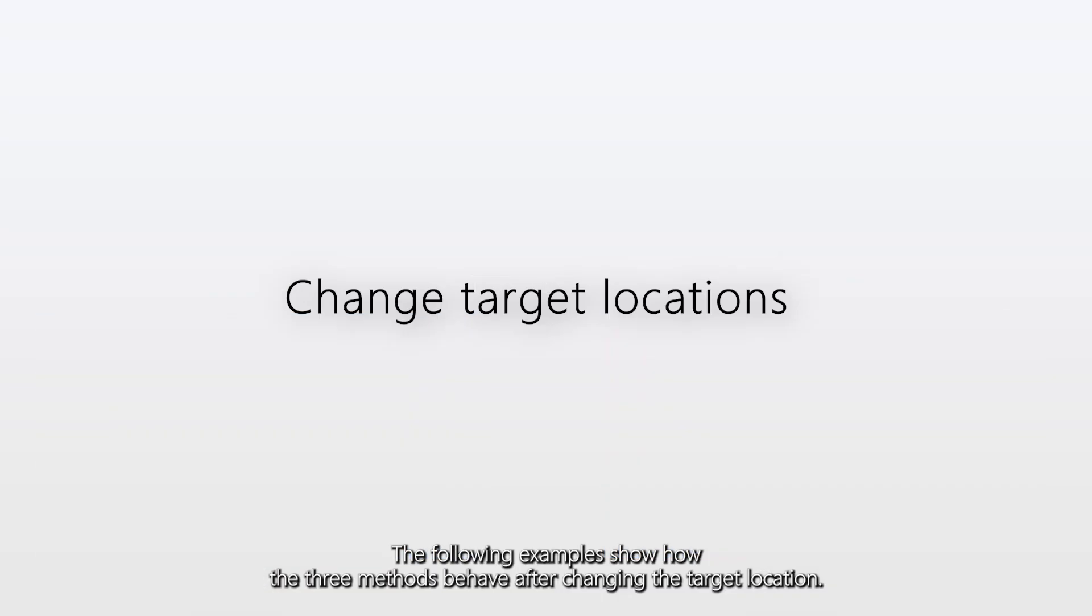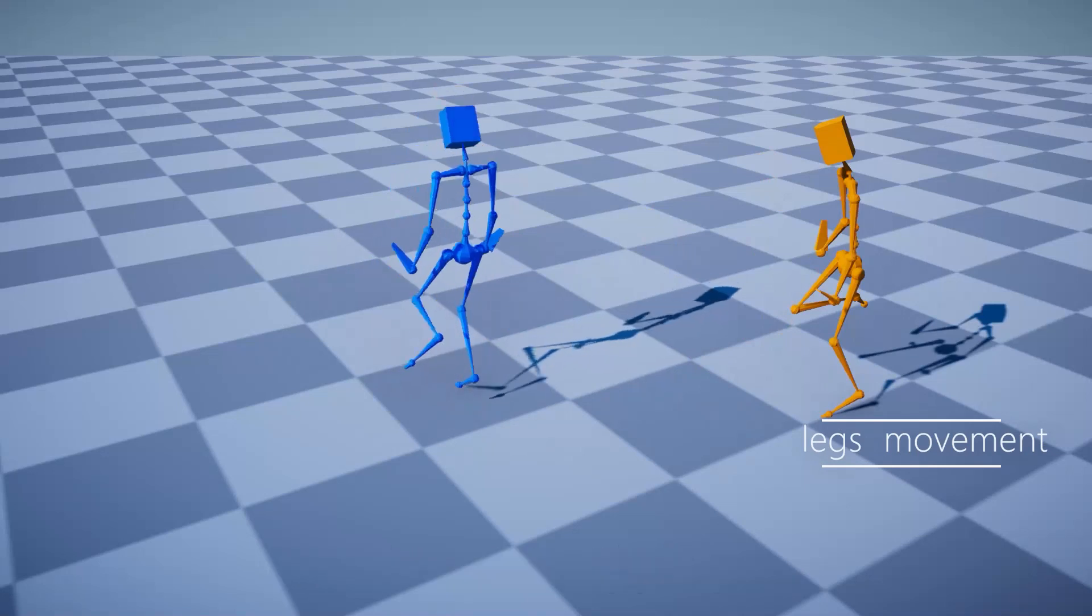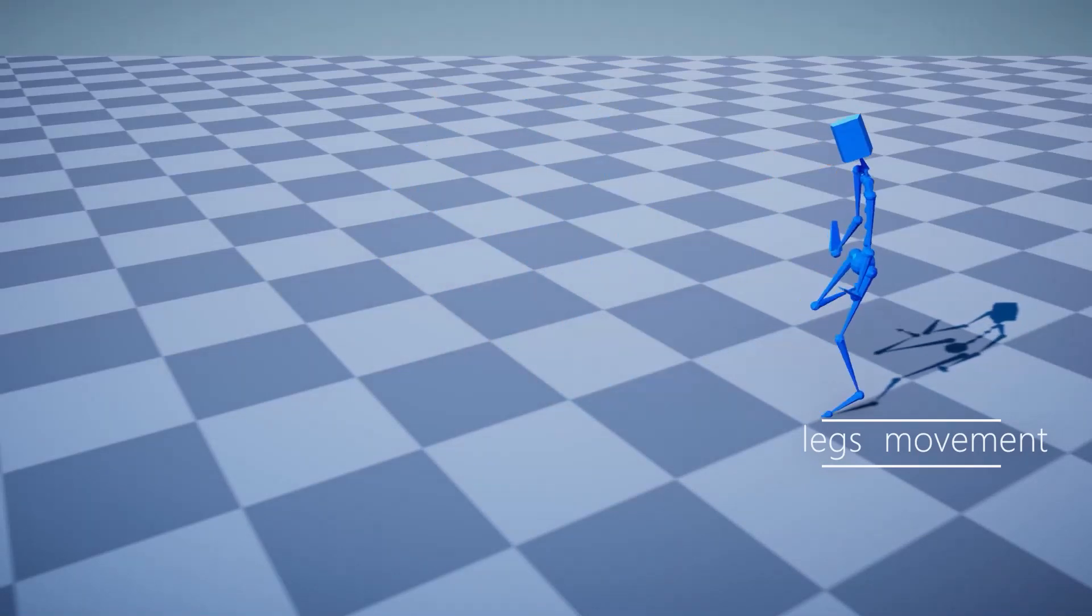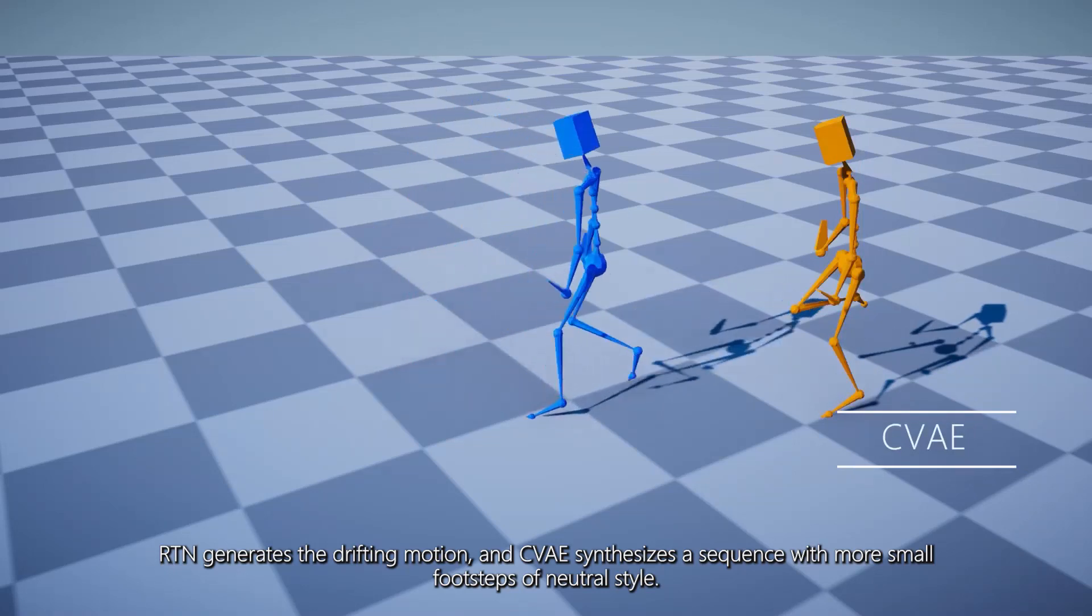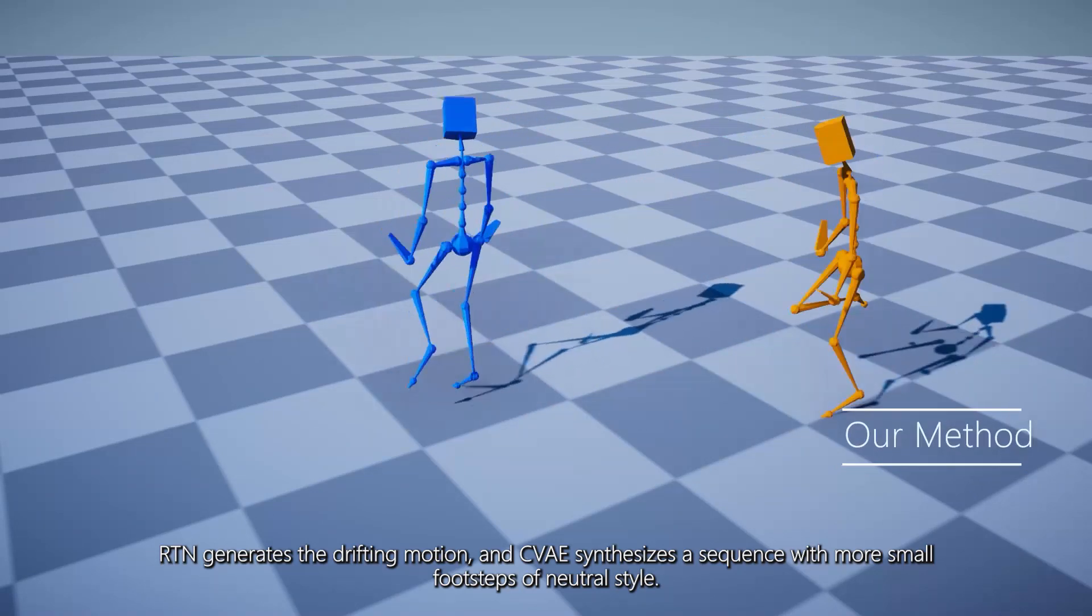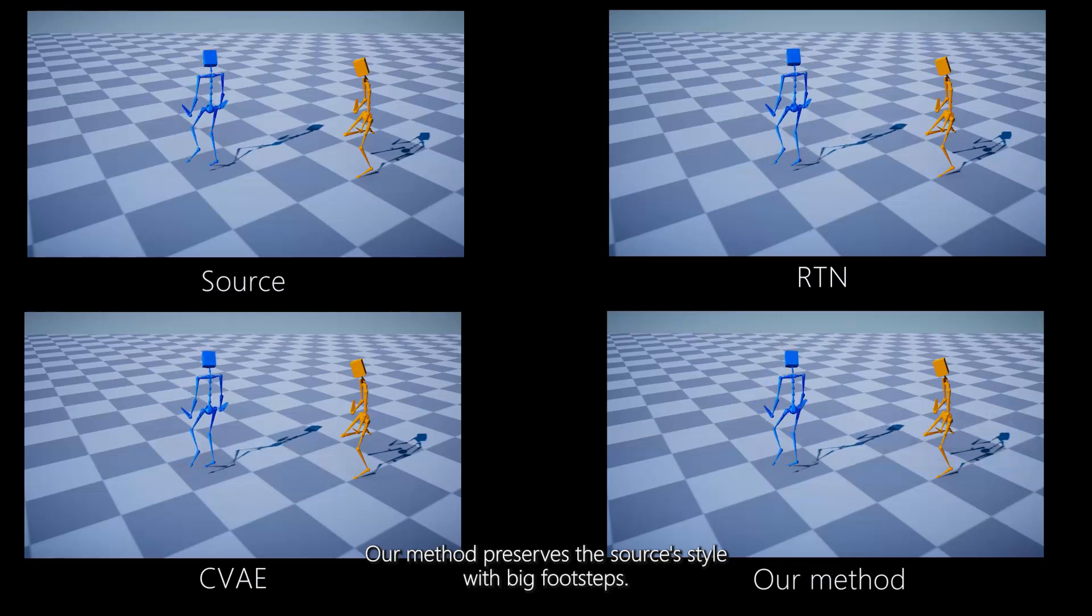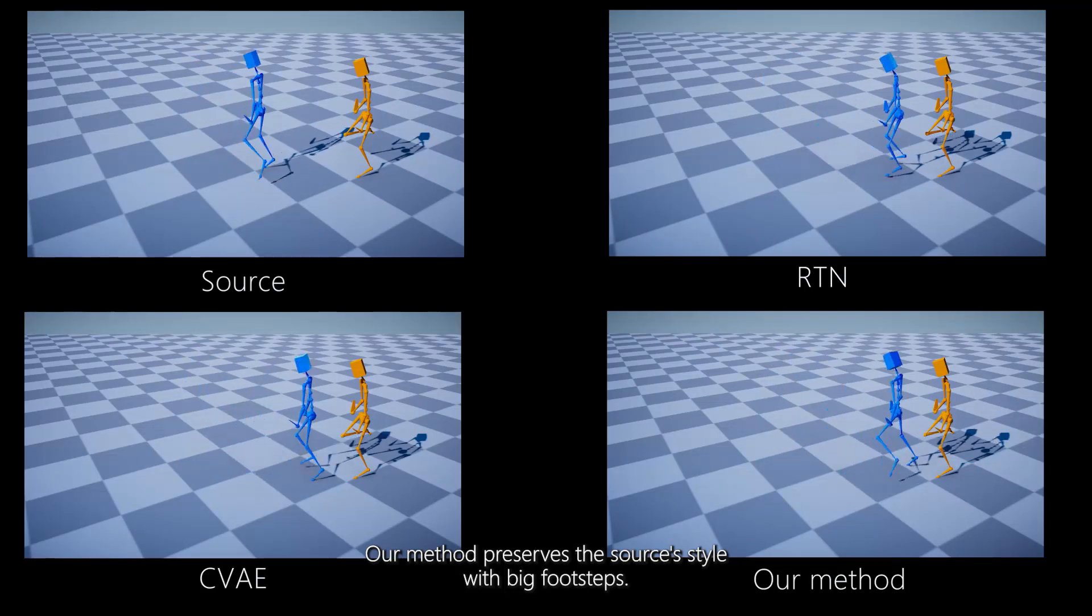The following examples show how the three methods behave after changing the target location. RTN generates the drifting motion, and CVAE synthesizes a sequence with more small footsteps of neutral style. Our method preserves the source's style with big footsteps.